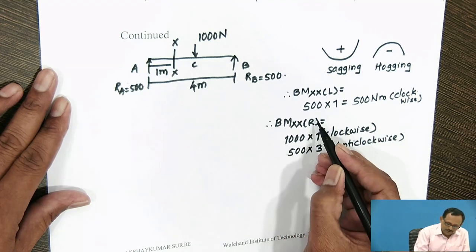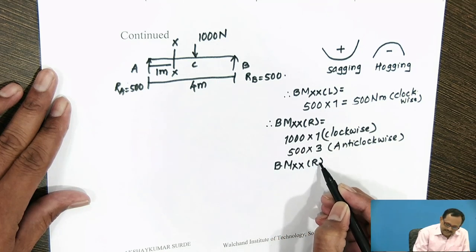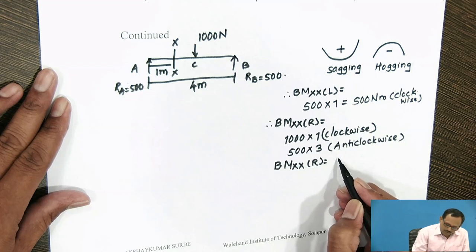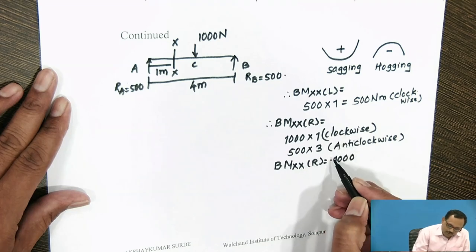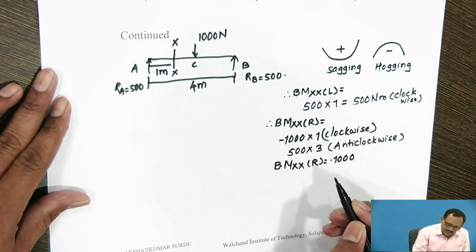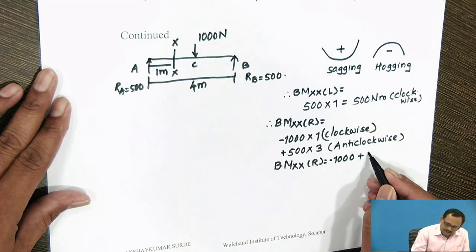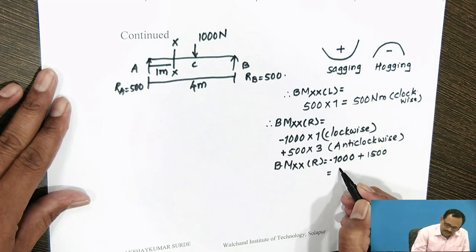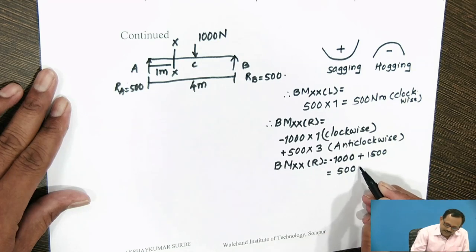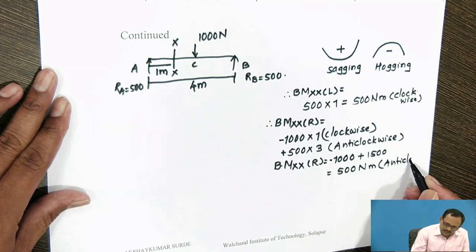Therefore, the bending moment at section XX referring to the right side: the clockwise moment is negative and anticlockwise moment is positive. So, −1000 + 1500 = 500 N·m, and this is in the anticlockwise direction.